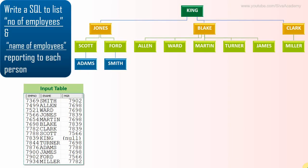Here is the employee table which contains employee information along with the manager ID. What we need to do is write a SQL which prints the number of employees working under each manager and the names of those employees — printed as a comma-separated list. If there are no people working under a manager, for example Adam Smith and a few others don't have any employees reporting under them.